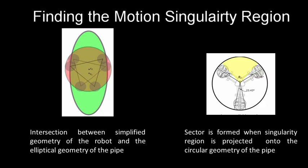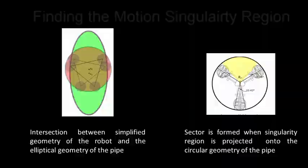In our paper, we find the motion singularity region in the elliptical cross section based on the intersection points of the circular geometry of the robot and the elliptical cross section of the pipe. A sector is formed when the projection of region is taken onto the circular cross section of the pipe at the end of the turn. For our robot, we find the sector subtends 96.54 degrees and so the robot has to rotate such that it avoids this region.